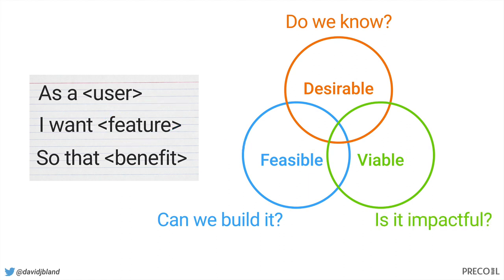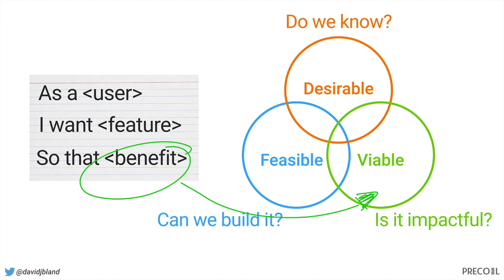With regards to viability, I think we make a mistake where we only focus on customer needs, but the benefit should also be to the organization. We sometimes just blindly follow customer jobs, pains, and gains, but never ask: is this aligned to our strategy? If you go after a problem but can't make it sustainable or it gets underfunded, you'll still fail — even if customers desire it. Viability also needs to address 'should we build it?' and 'is it impactful?' — moving some KPI that's aligned to your strategy.